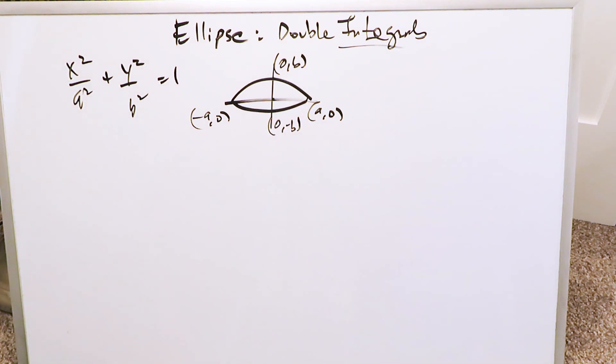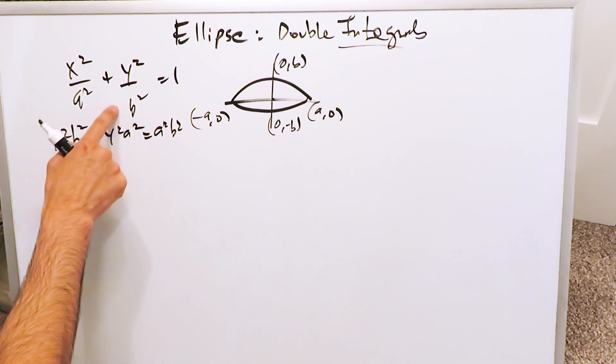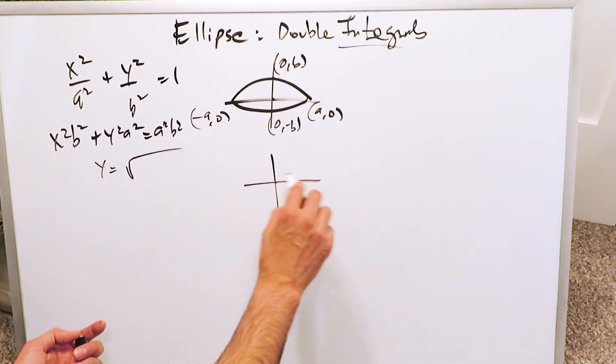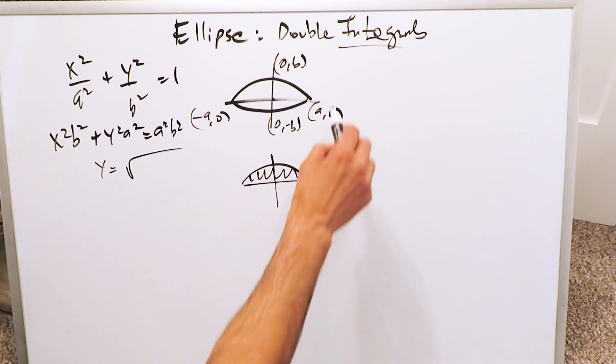We want to determine the area formula of that. We know what it is from our other procedures, but here we're doing with double integrals. You can start with this and do a common denominator for which you'll get x squared b squared plus y squared a squared is equal to a squared b squared.